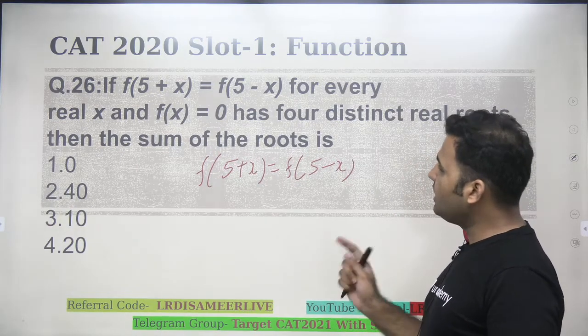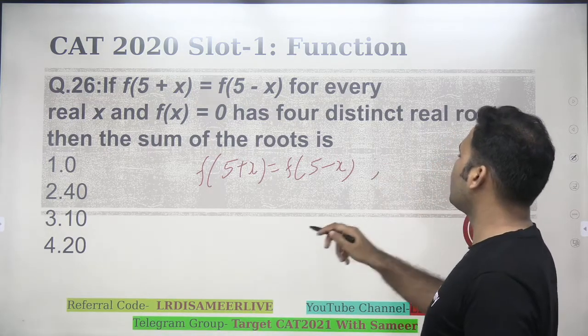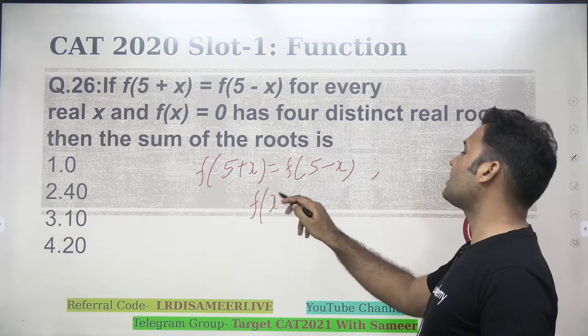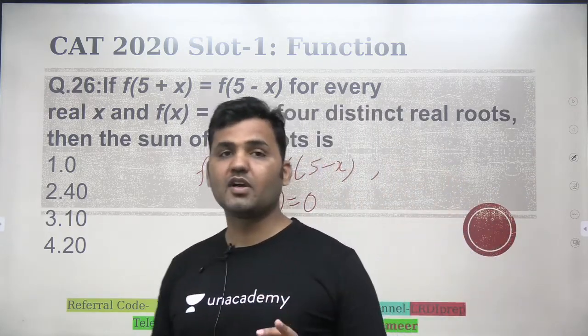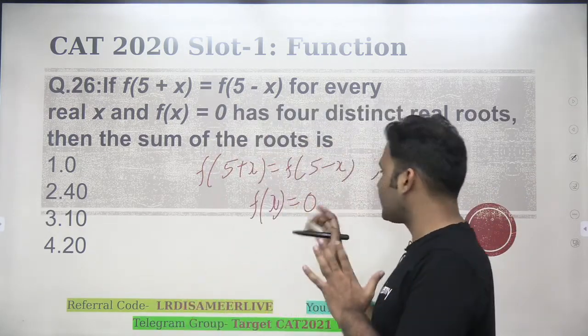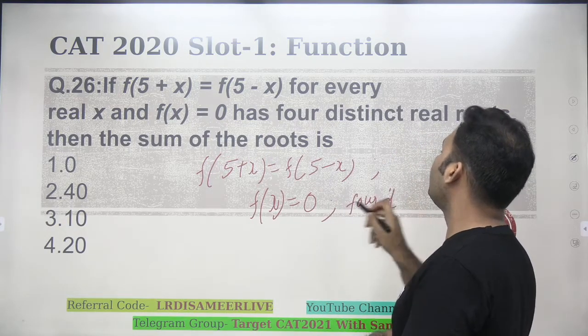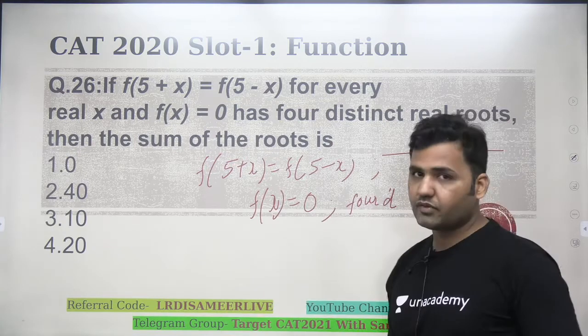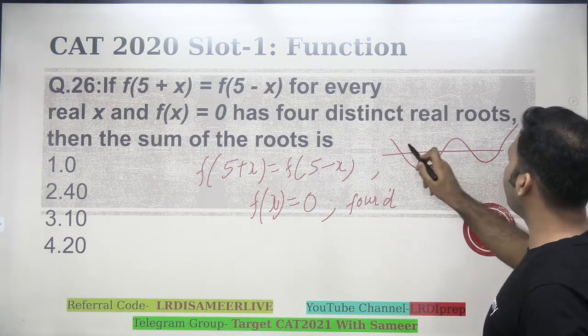Now, for every real x, that means x has to be real number, and f of x is equal to 0. So, f of x in terms of x is a kind of expression which we are not aware of, but if I make f of x as 0, it will have 4 distinct roots. What does it mean? It means whatever is a graph of f of x is equal to 0, it cuts x-axis on 4 different values.